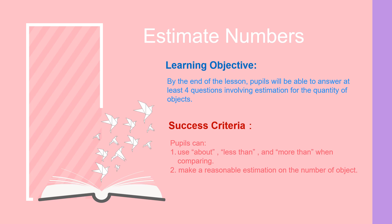What are our success criteria? Macam mana kamu nak tahu kamu berjaya hari ini? Pupers can use 'above', 'less than', and 'more than' when comparing. Maksudnya, lepas ini, kalau kamu boleh gunakan perkataan above, less than ataupun more than masa kamu buat comparing, maksudnya awak sudah berjaya. And then, make a reasonable estimation on the number of objects — kamu boleh buat jangkaan yang munasabah ataupun logik.